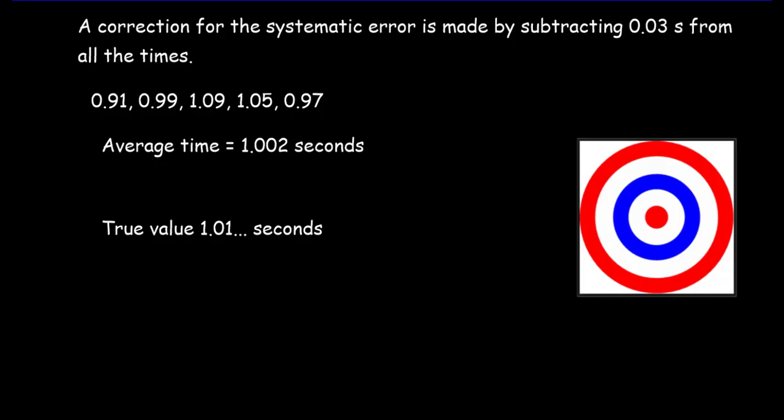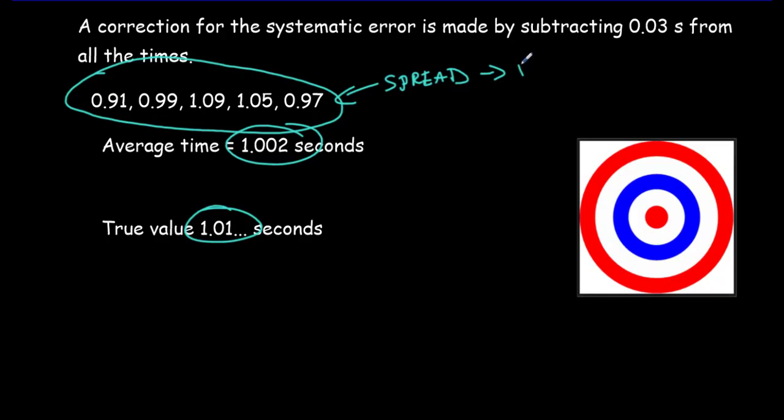So our first step now to improve our results would be to correct for that systematic error. So we're going to subtract 0.03 seconds for all those times. And we'd get these times here, which gives us an average time which is much closer to the true value. So now we've become quite accurate, but we've still got lots of spread to our times. And that indicates poor precision.